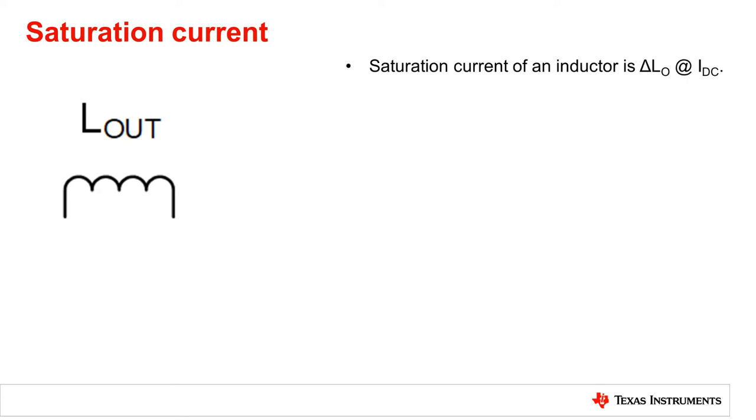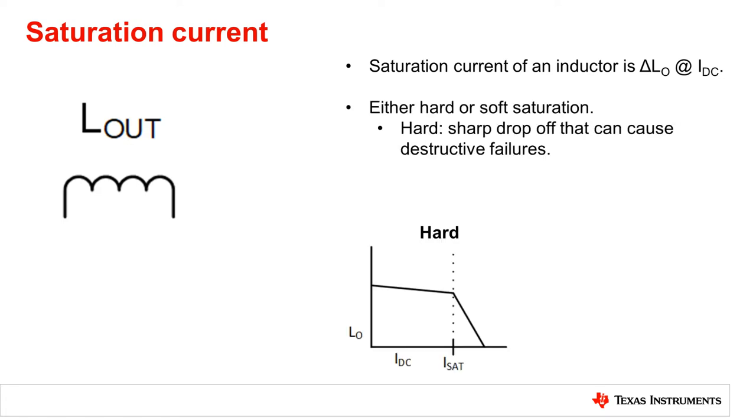Saturation current is usually defined by a decrease in inductance when compared to the current flowing through it. There are two types of saturation, hard and soft saturation. Hard saturation has the inductance decrease rapidly after saturation, while soft saturation has the inductance decrease slower.